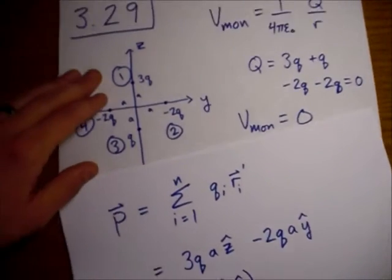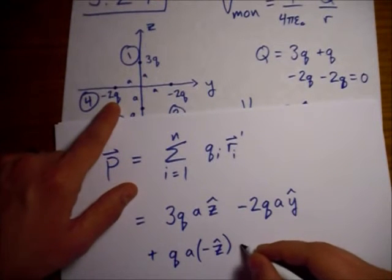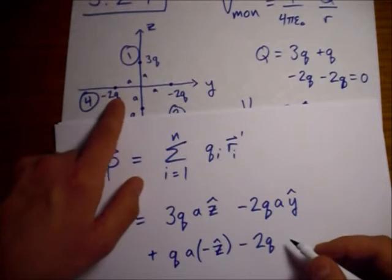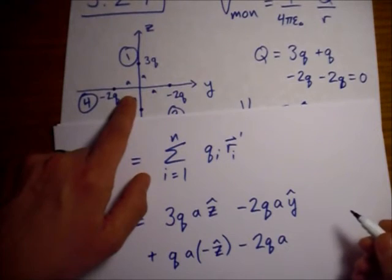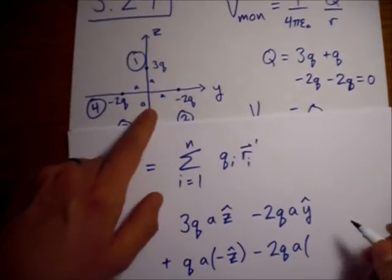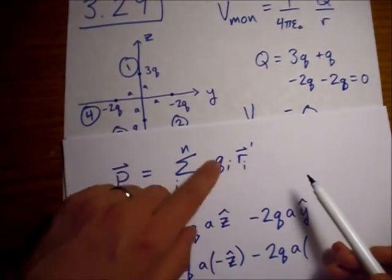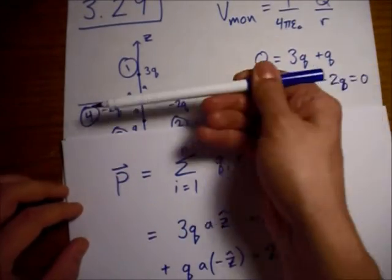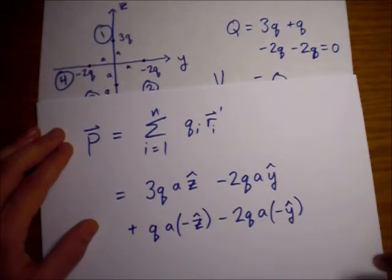And finally, we have point number 4, whose magnitude is minus 2q, charge magnitude. The displacement magnitude is a, again. And then, the direction now, for our r sub 4 prime vector, displacement vector, is now in the negative y direction. So, I put a negative y hat right here.